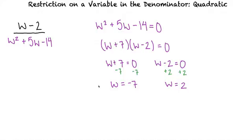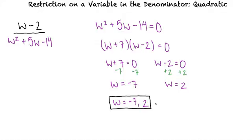So since we have w = −7 and w = 2, we can write our answer as w = −7, 2. When we are given a fraction expression and asked to find values for the variable that make the expression undefined, we determine restrictions on the denominator by setting the denominator equal to 0 and solving for the variable.